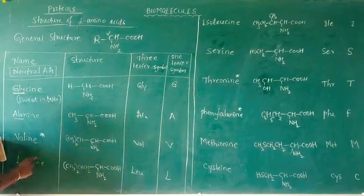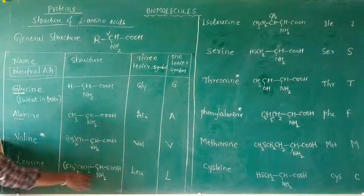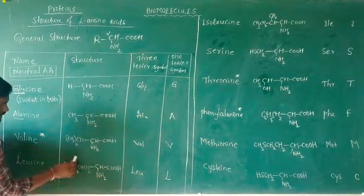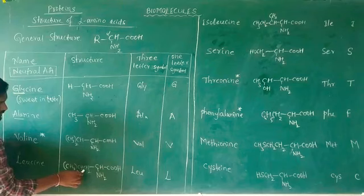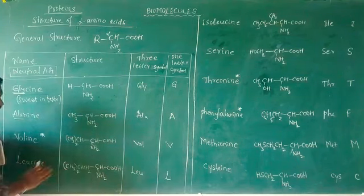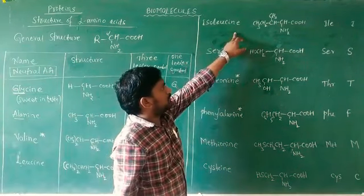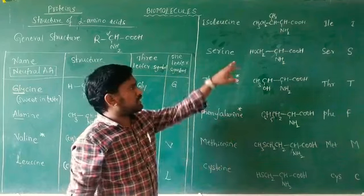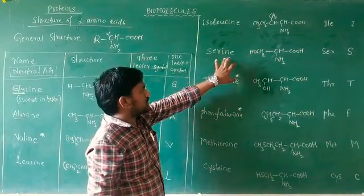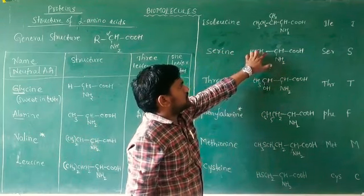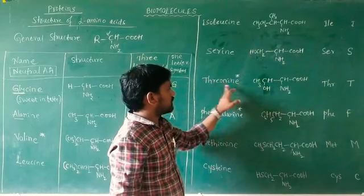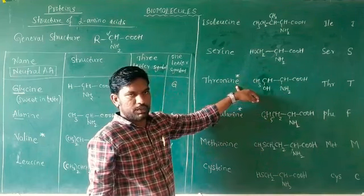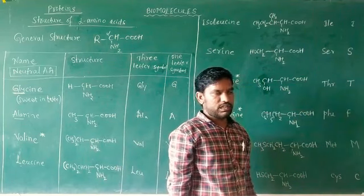Another neutral amino acid is leucine, which has one amino group and one basic group, making it a neutral amino acid. The variable R is CH2-CH(CH3)-CH3. The three-letter symbol is LEU and one-letter symbol is L. Similarly, isoleucine has variable R as CH3-CH2-CH(CH3)-, with three-letter symbol ILE. Another is serine or threonine, with alkyl part, three-letter symbol SER and one-letter symbol T.